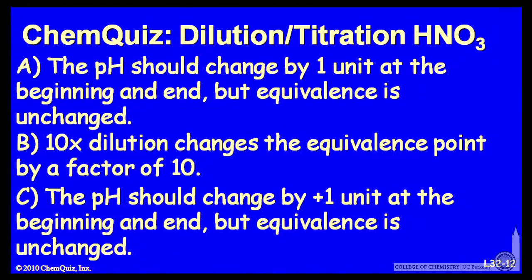Let's look at a possible explanation for each answer. A: the pH should change by one unit at the beginning and the end, but the equivalence point is unchanged. B: 10-fold dilution changes the equivalence point by a factor of 10. Or C: the pH should change by one unit at the beginning and the end, but the equivalence point is unchanged. Think about those and make a selection.